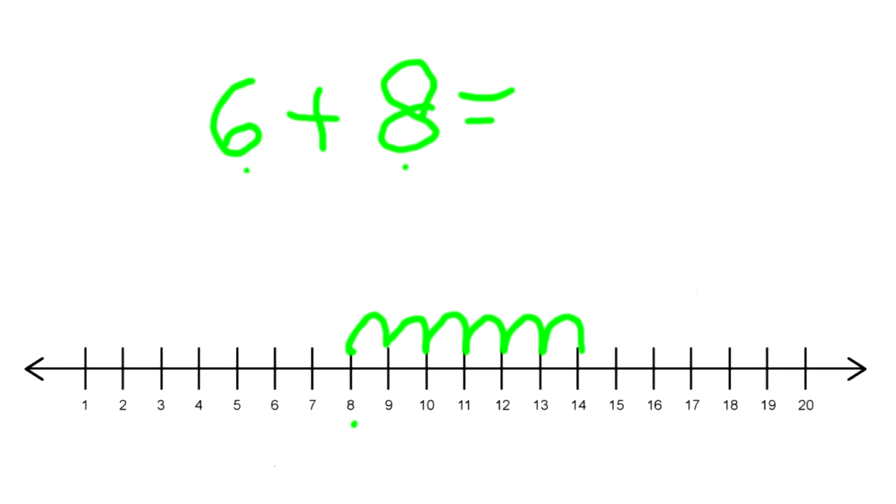And like I said, if you forget how many times you jumped or you hopped, you can count the number of bumps right there. So there's 1, 2, 3, 4, 5, 6. And what number did we end up on? On the number 14. So 6 plus 8 equals 14.